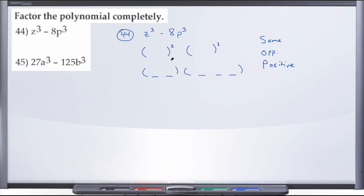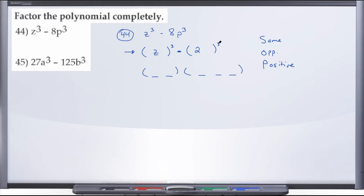We know that whatever the original sign separating our two cube terms was, we bring it down — so in this case, subtraction. Now we fill in line 1 by asking: what do I have to cube to get Z cubed? Well, I have to cube Z. And what do I have to cube to get 8P cubed? What number cubed gives me 8? 2 cubed gives me 8. And what variable cubed gives me P cubed? Just P. So line 1 is Z and 2P.